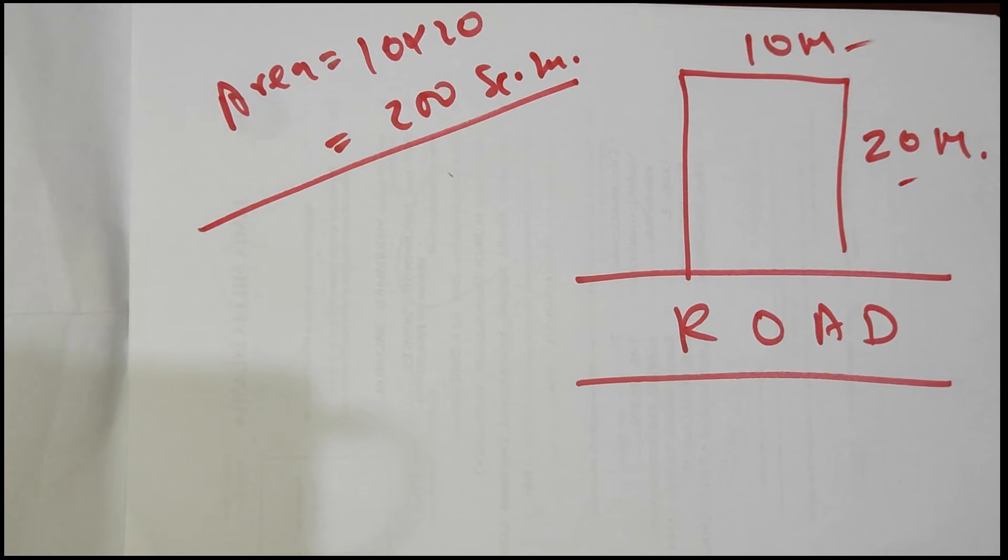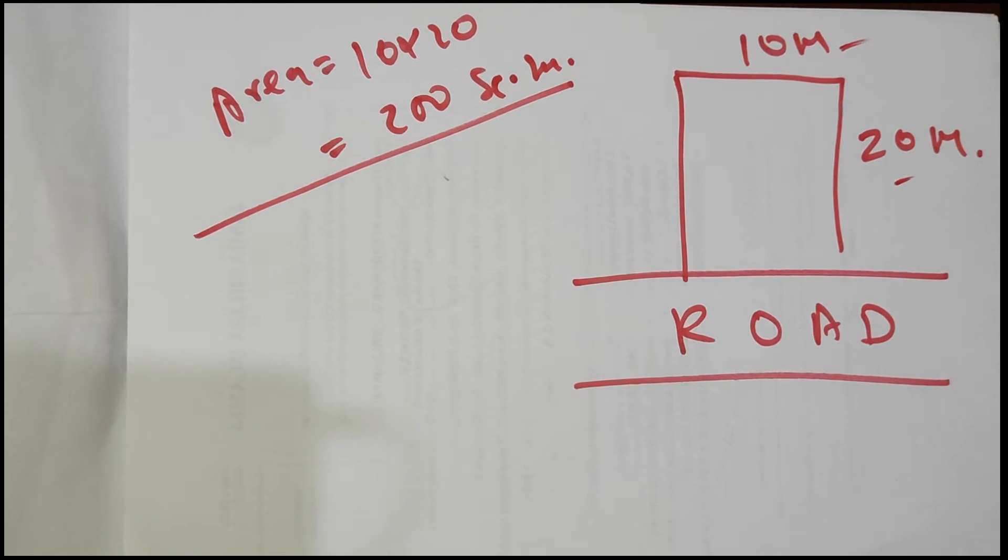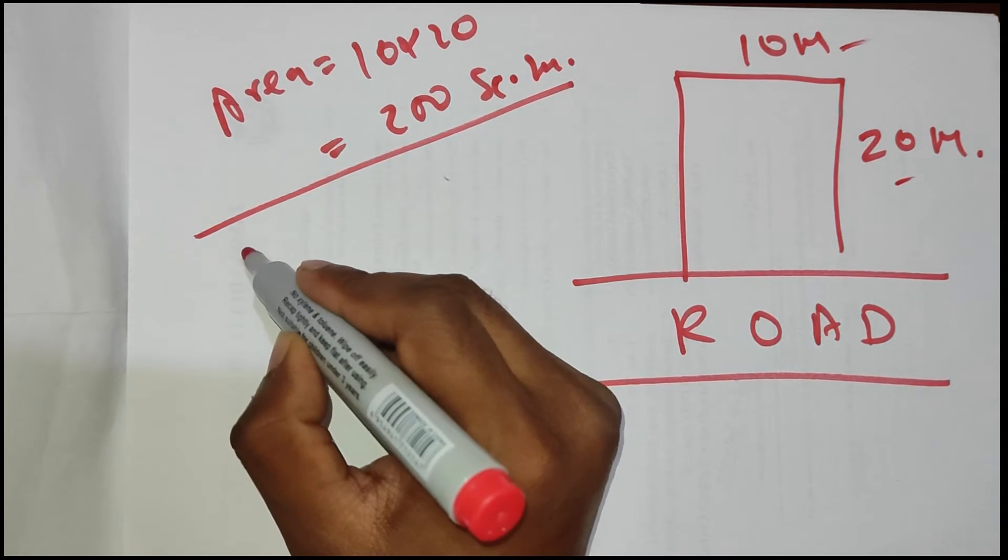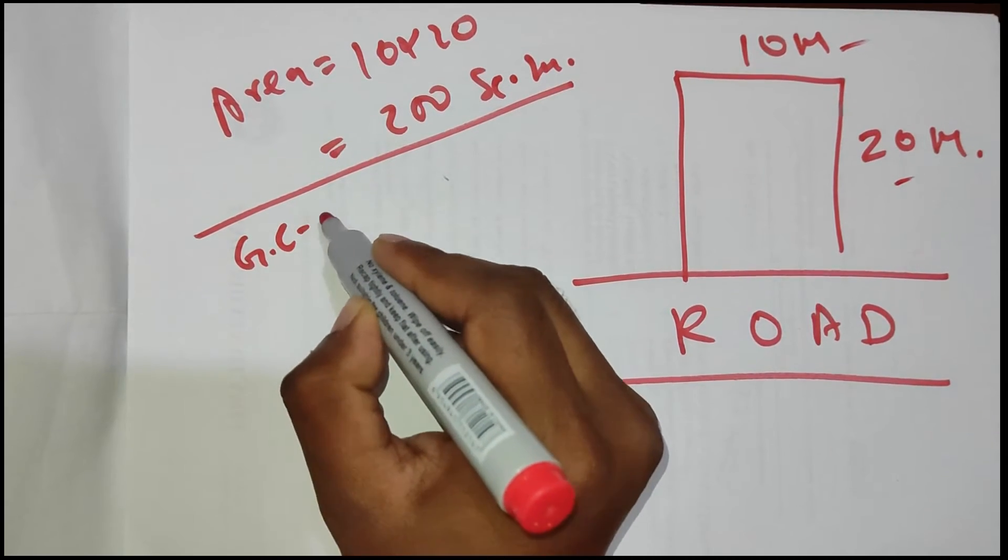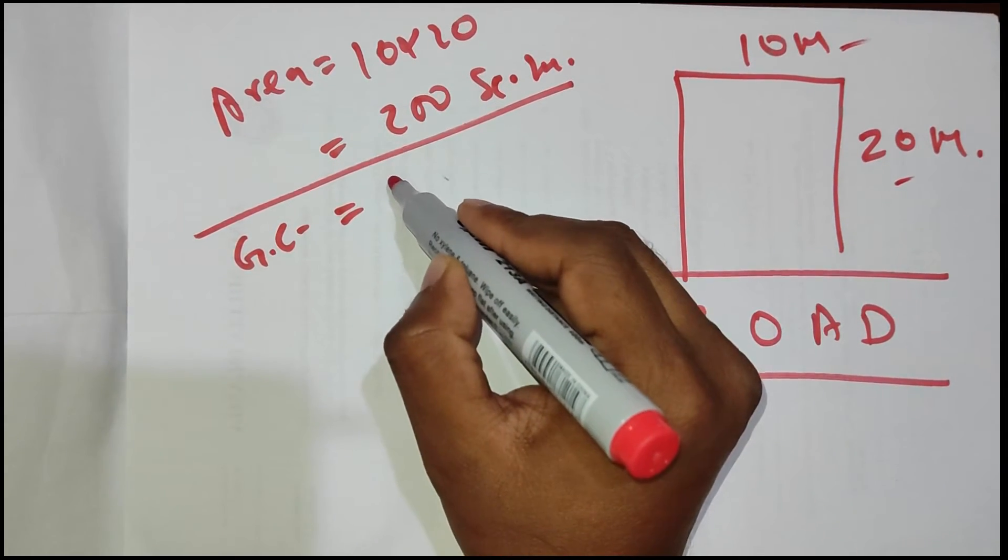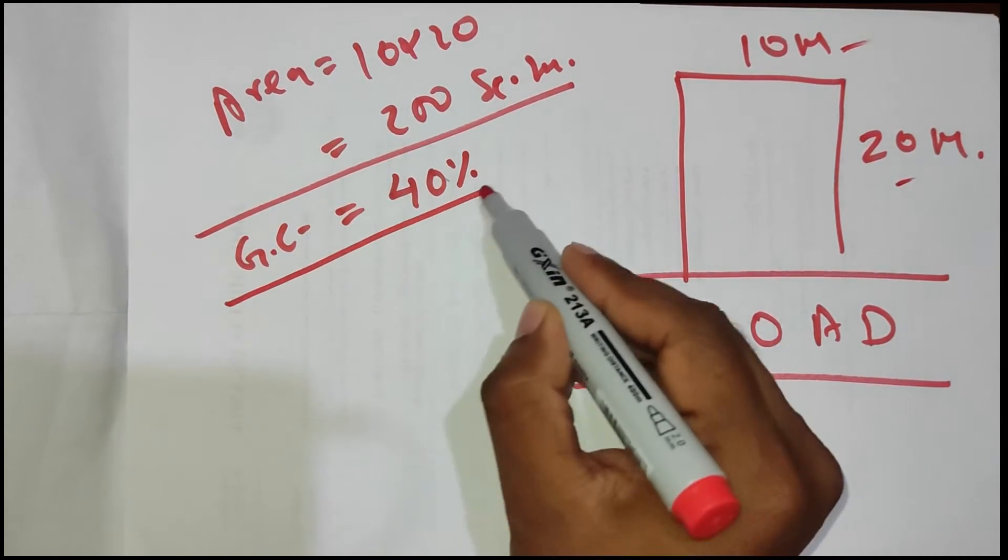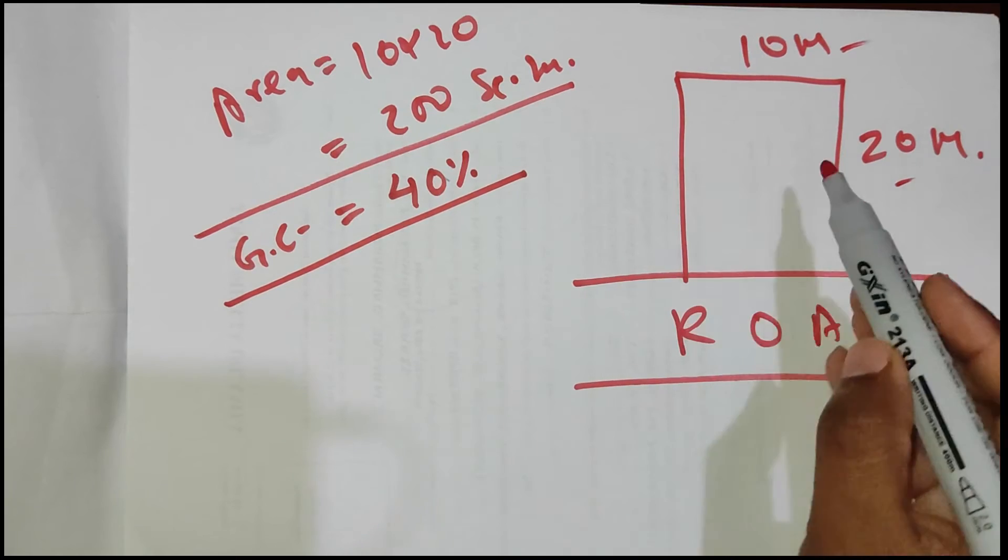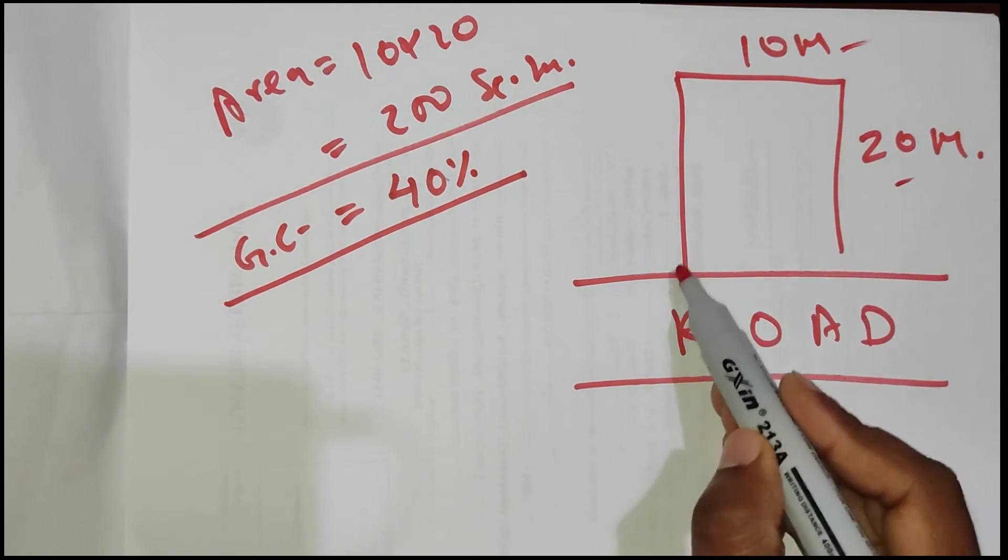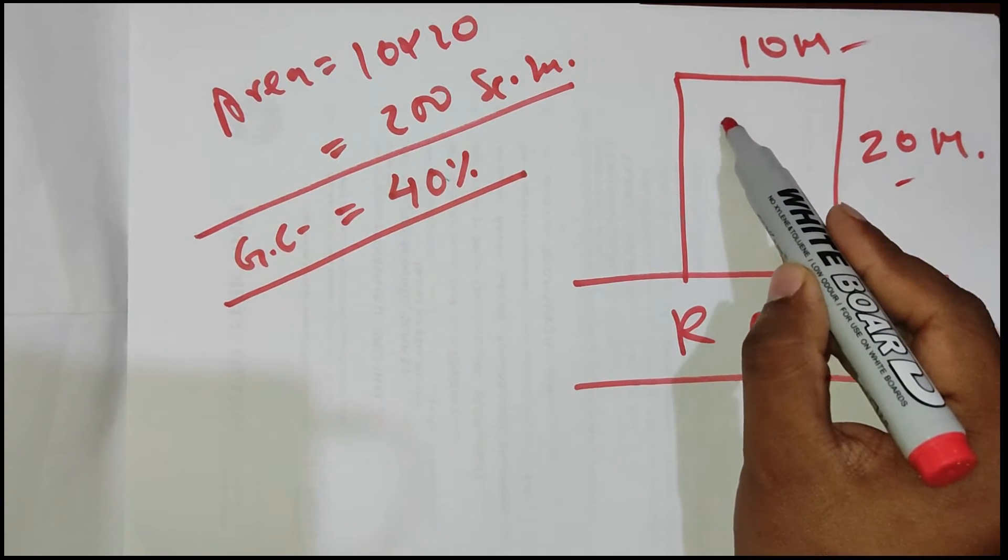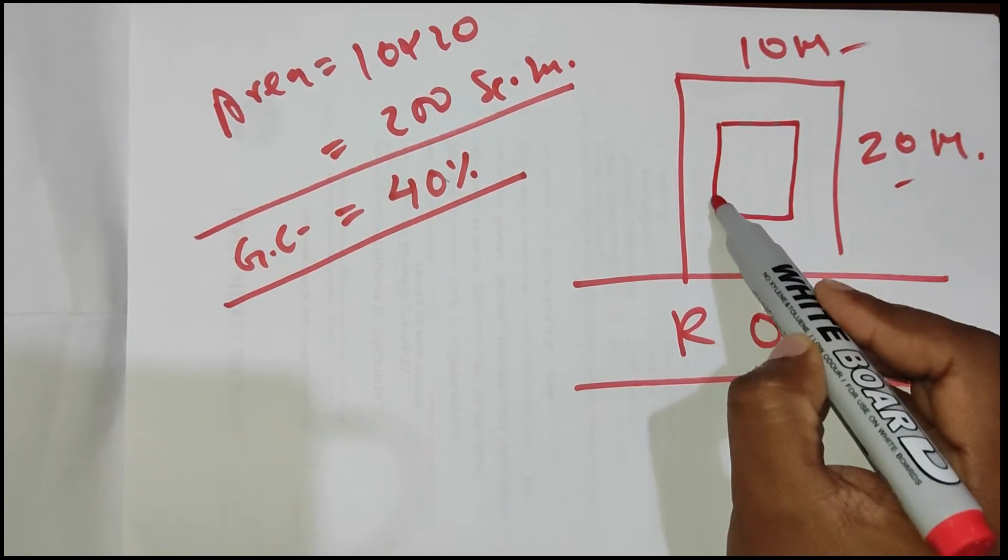For the calculation of number of floors, you require additional data that will be mentioned in the bylaws book. The two required data are: first, ground coverage (GC), always mentioned in percentage. Let's assume it is 40 percent. That means for this 10 by 20 meter area, we can build only 40 percent of the entire area. This is the ground coverage.